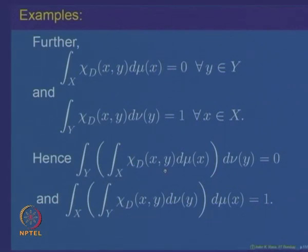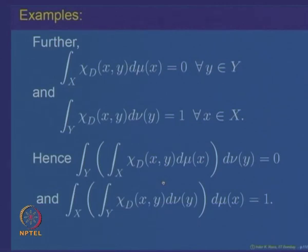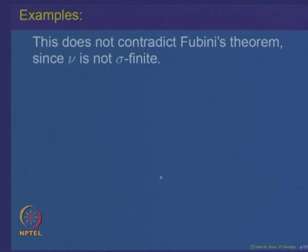This seems to contradict Fubini's theorem, since the indicator function is a non-negative function yet the two iterated integrals are not equal. But that is not the case, because the measures involved — both of them are not sigma-finite. Lebesgue measure is sigma-finite, but the counting measure is not sigma-finite. So this does not contradict Fubini's theorem since the counting measure is not sigma-finite. The counting measure of the whole interval [0,1] is infinite and you cannot divide it into a countable number of pieces each having finite measure, because [0,1] is uncountable. So the counting measure is not sigma-finite, and that is why this does not contradict Fubini's theorem.